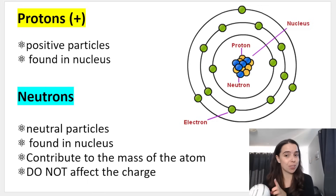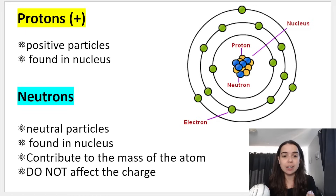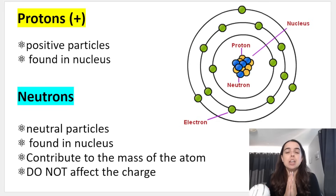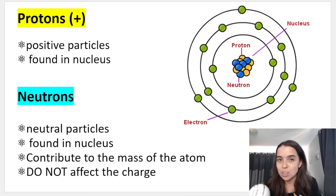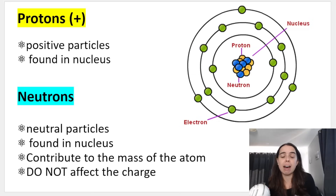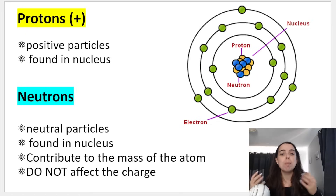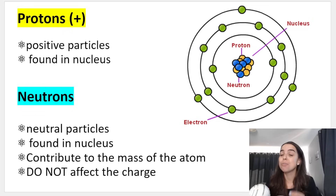Protons are positive — positive protons — and they're found in the nucleus. Neutrons are neutral, meaning they have no charge: not positive, not negative. Neutrons are important because they contribute to the mass of the atom. They basically determine if you have a heavier or a lighter atom, but because they are neutral they don't affect the charge.